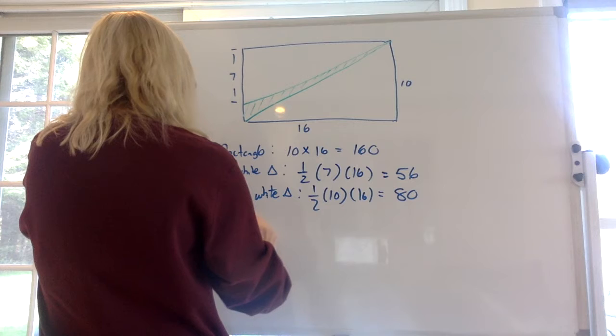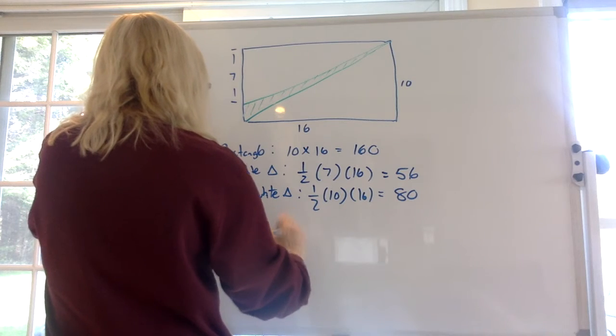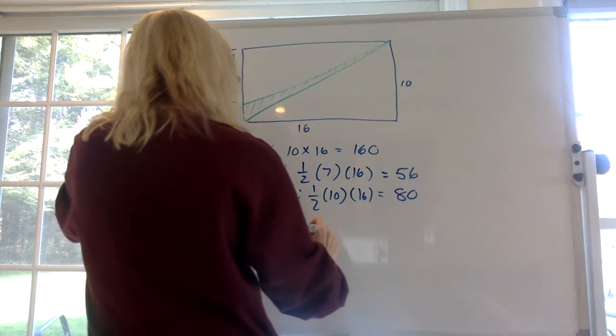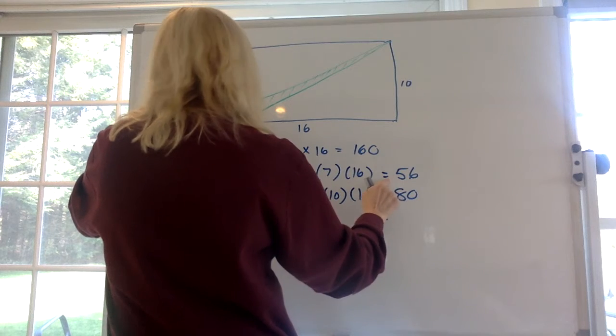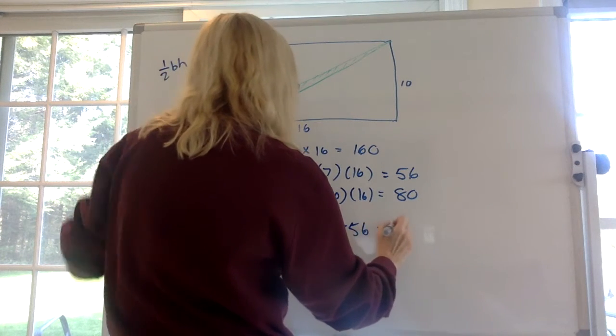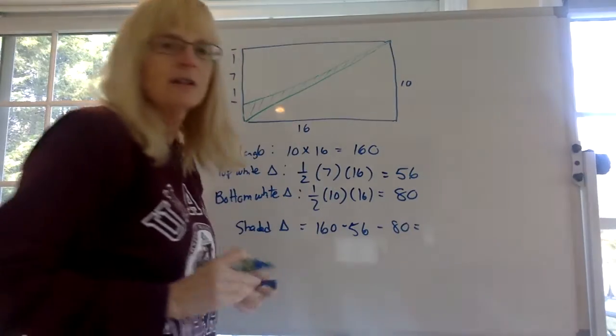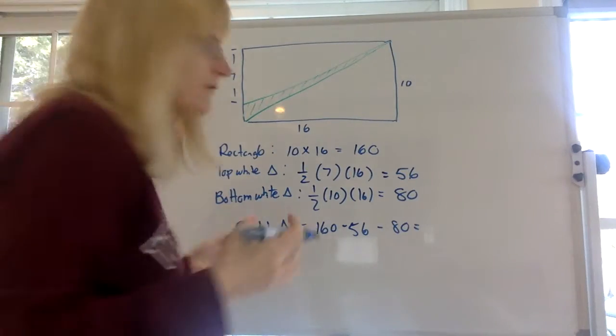So the shaded triangle area is equal to what? It's equal to 160 minus the top triangle minus the bottom triangle. And when you do that, I think you get 24.